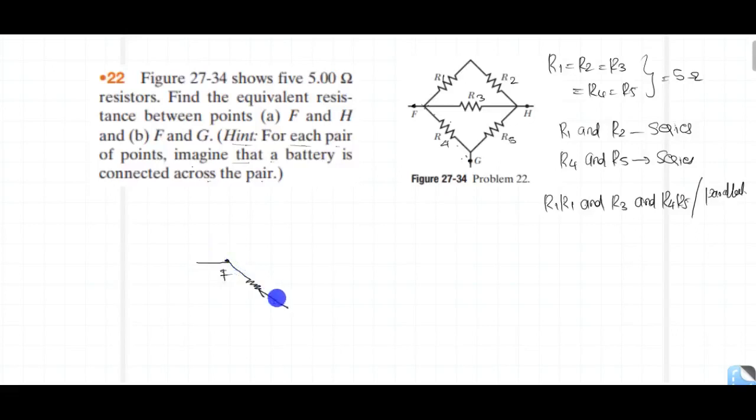Here we have R4. This is point F. This is point G. Here we have R5. Then simplify first which is easier to do. Which one is easy? R1 and R2 are series combination. This is equal to R12. This is point F. Now R1 and R2 are series.